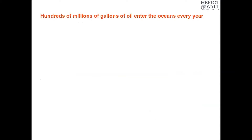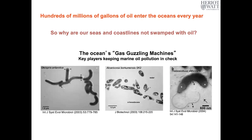Our oceans and seas aren't covered in black goo, and this is fortunately due mainly to oil degrading bacteria — the ocean's gas-guzzling machines that help to mop up the oil as it enters the sea. These types of organisms do the same job on land, but something unique about the ocean is that, as far as we know, only the oceans contain oil degrading bacteria that use oil as their preferred food. These types of bacteria are referred to as obligate oil degraders. In other words, if you give them conventional food sources such as sugars, they won't touch it — but give them oil, and they'll be very content and thrive.